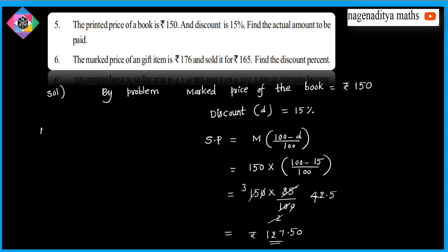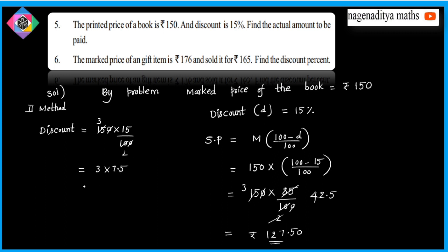Second method: Discount is equal to 150 into 15 by 100. Cancel zeros — 5 goes 3 times, 2 times — so discount equals 22.5 rupees.